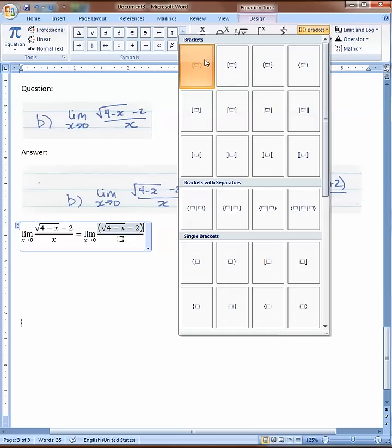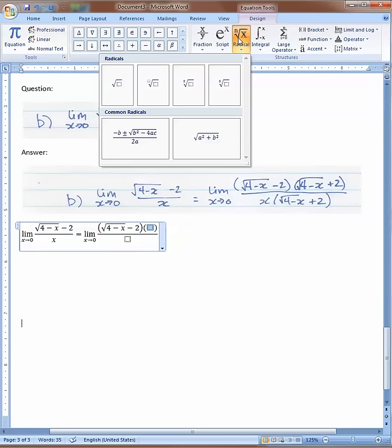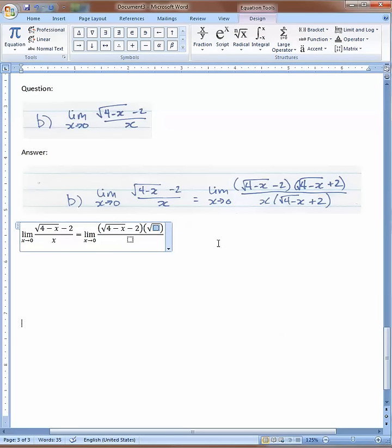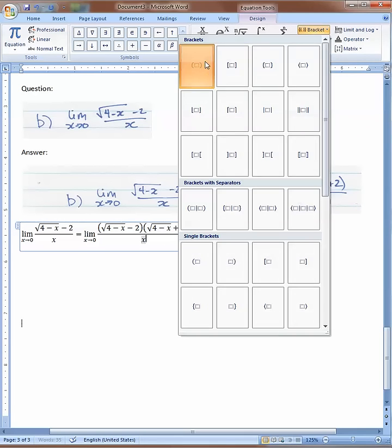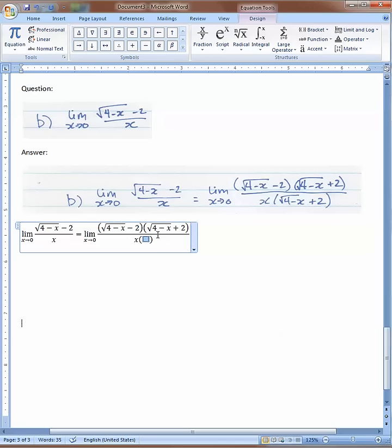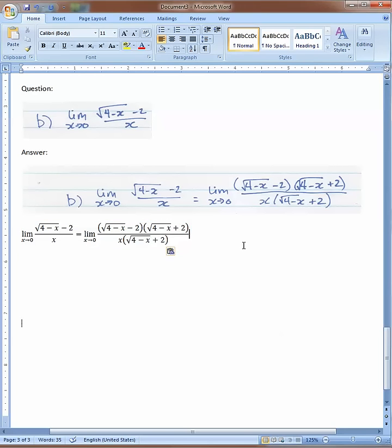We need another set of brackets for the conjugate. Click in there, radical, click in there: √(4-x), right arrow to get out, plus 2. Then on the bottom: x, another pair of brackets. I could copy and paste - let's give that a try. Copy, paste. There it is, we're done.